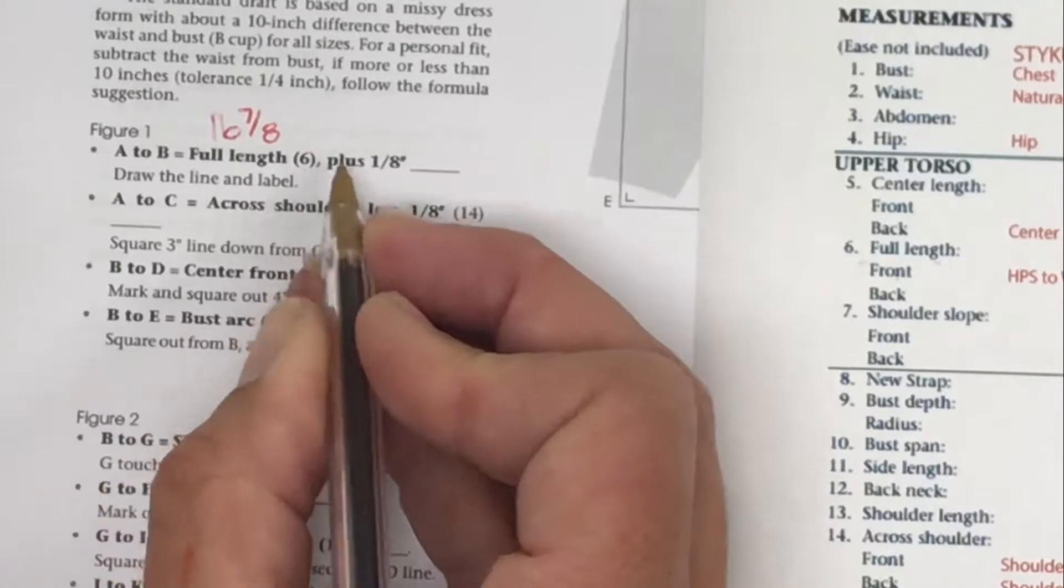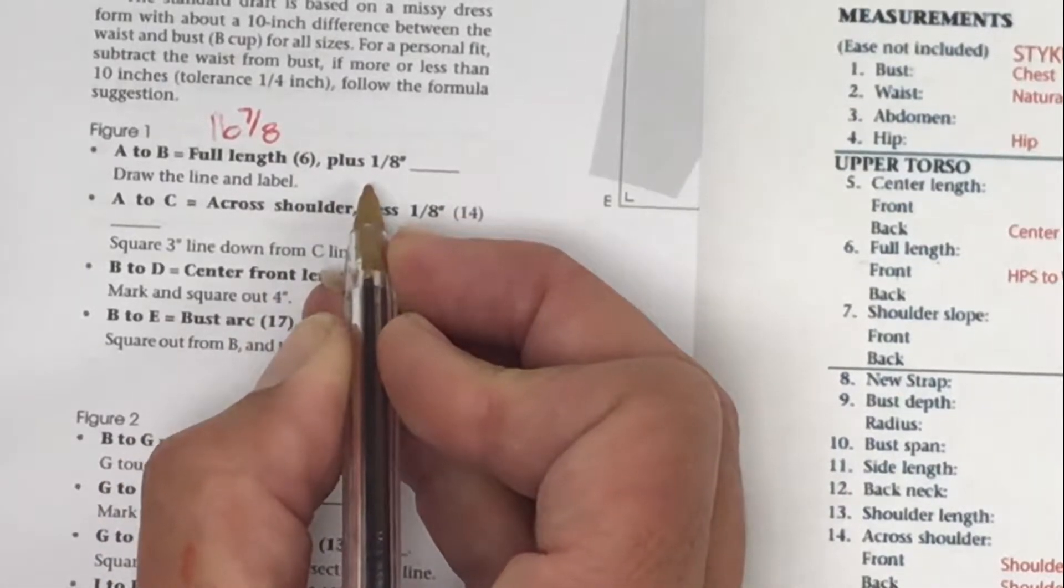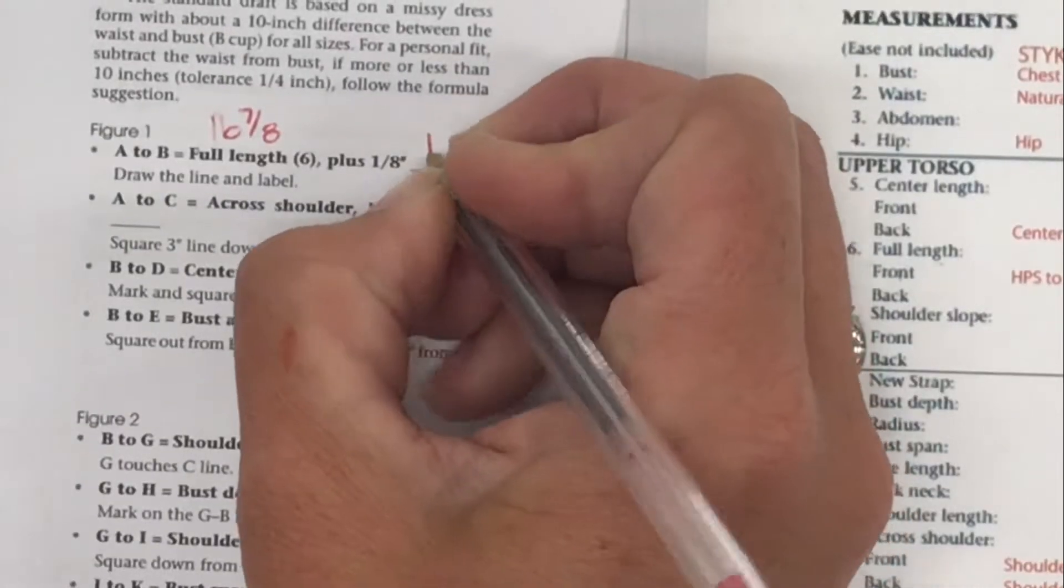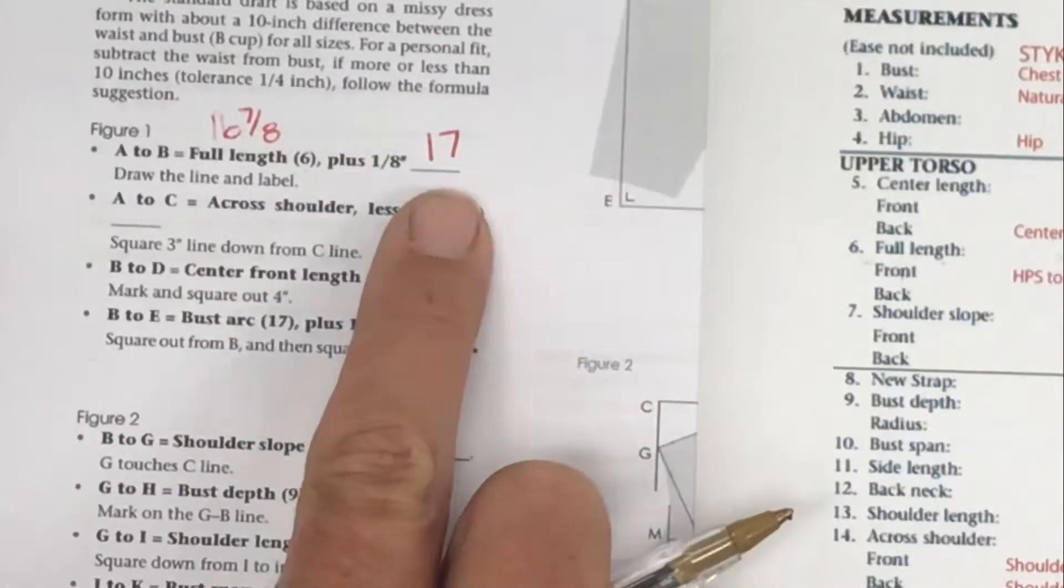7/8 plus 1/8 equals 8/8. 8/8 is the same as 1. 16 plus 1 is 17, so the right measurement I will be using is 17.